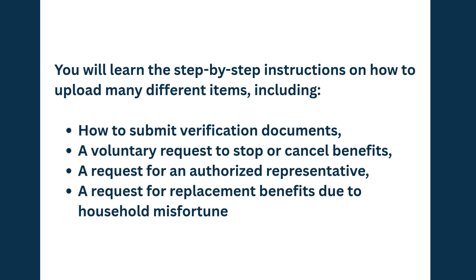These items include how to submit verification documents, a voluntary request to stop or cancel benefits, a request for an authorized representative — an authorized rep is someone that can assist with completing documentation, shopping for you, or updating case information — and a request for replacement benefits due to household misfortune.